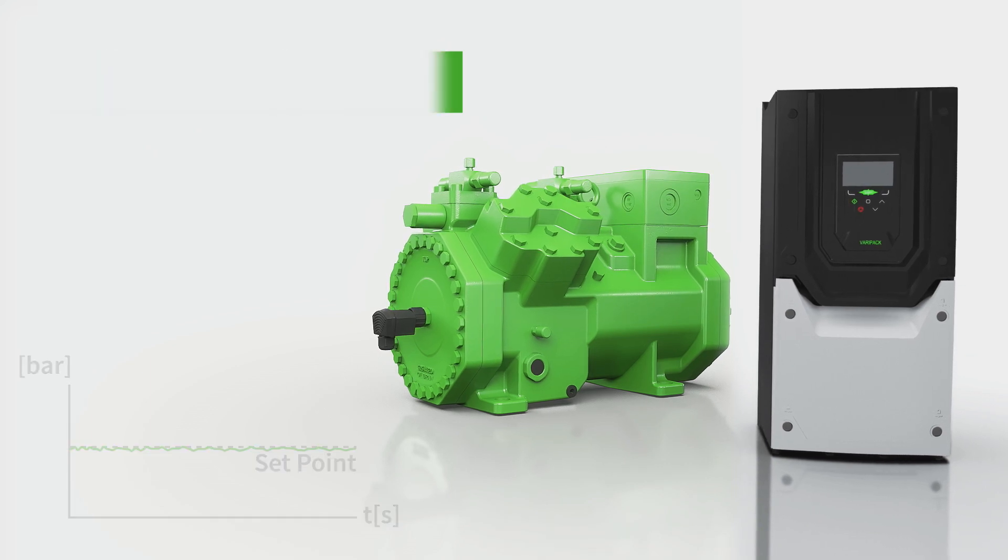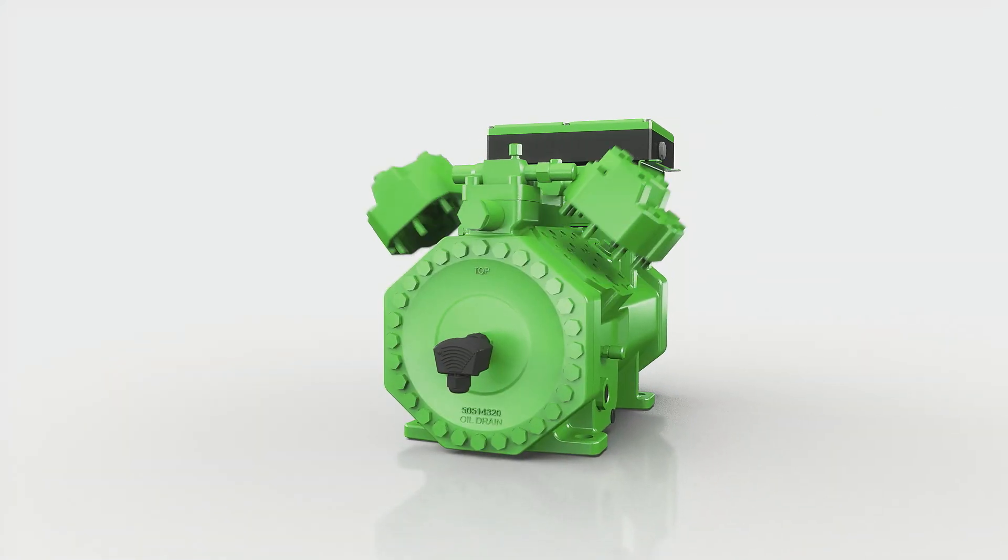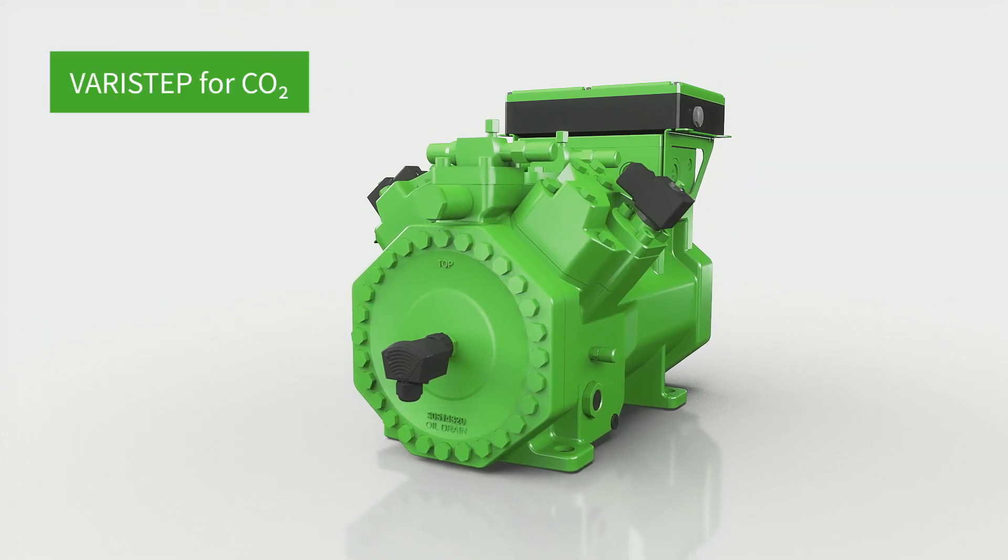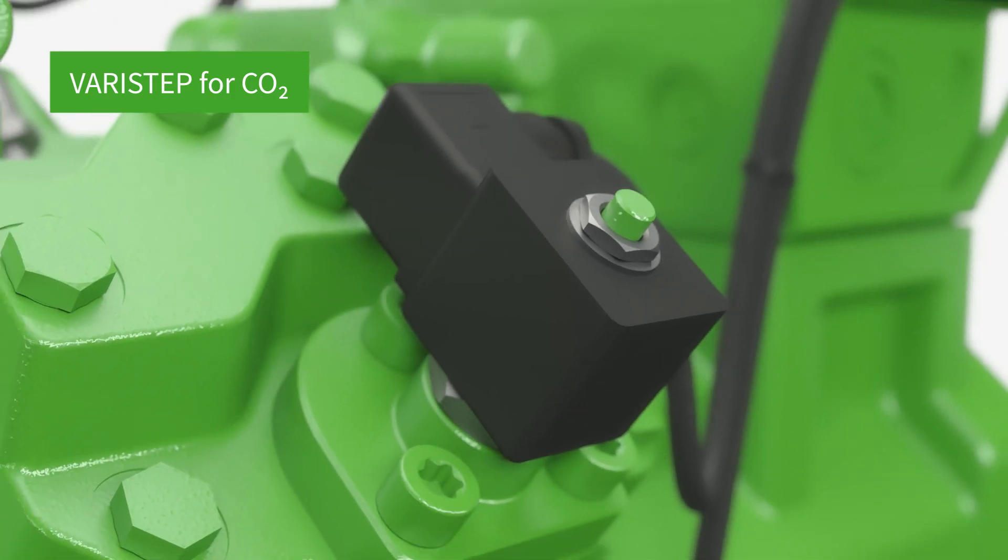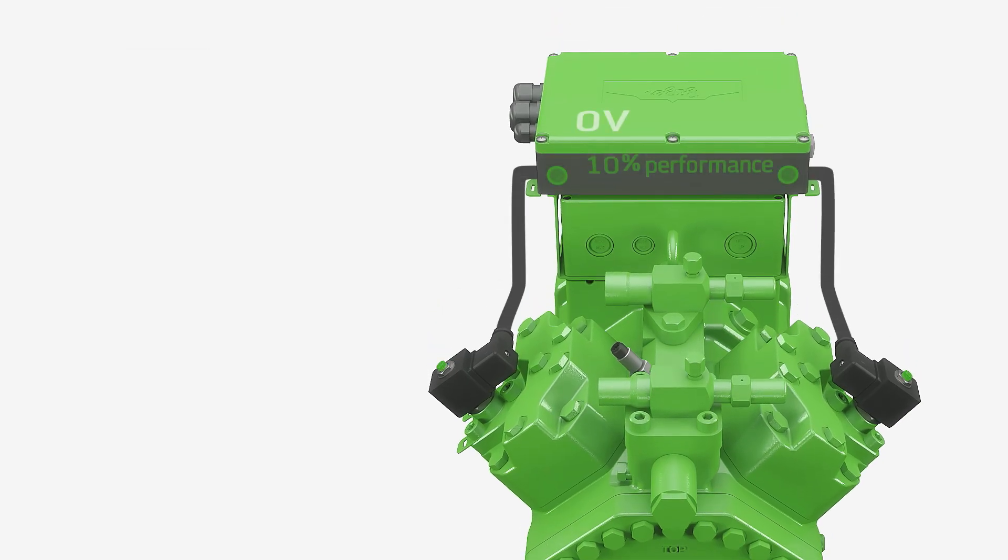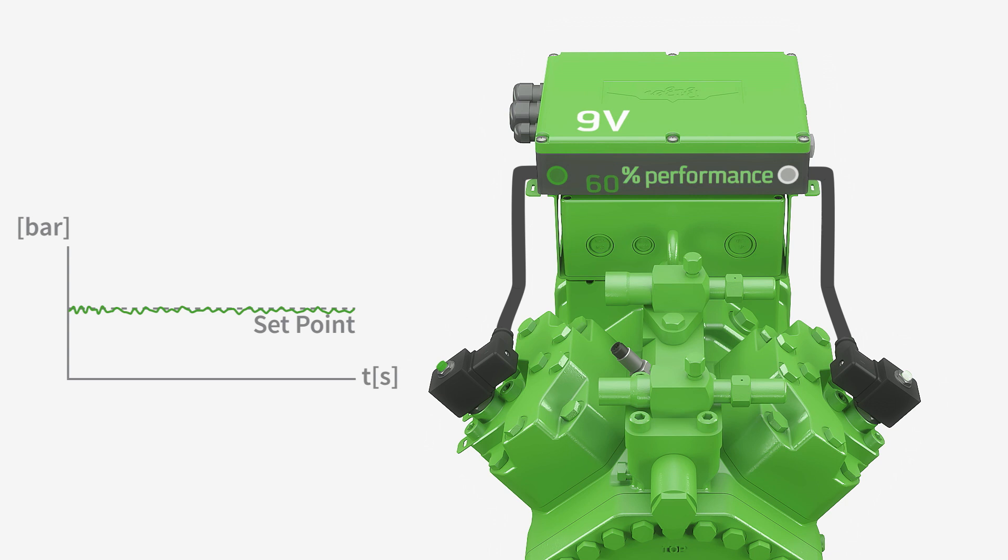As another option, Bitsa offers a new form of mechanical capacity control: VariStep for CO2. The intelligent VariStep mechanical capacity control enables virtually stepless operation between 10 and 100%, is designed for high pressure in trans-critical CO2 applications, and allows for a compact design.